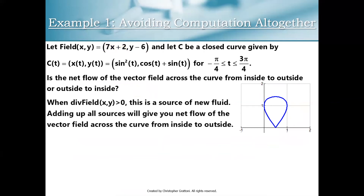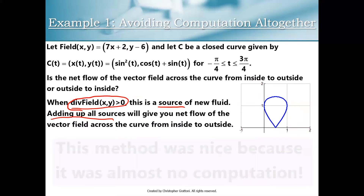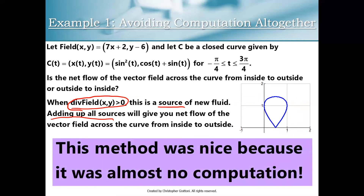When the divergence is greater than zero, we have a source. If we're accumulating all sources, that's guaranteed to give us a net flow of the vector field across the curve that goes from inside to outside. This is a great method because it doesn't require any computation. We'll also see the flip side where we actually have to crunch some numbers — that'll be the case when we have a vector field with some sinks and some sources, and we'll have to find the balance between the two.